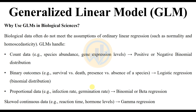For count data, examples include species abundance and gene expression levels, using Poisson distribution. For binary outcomes, examples include survival or death, presence or absence of a species — this uses logistic regression with a binomial distribution. The third type is proportional data, with examples such as infection rate and germination rate.